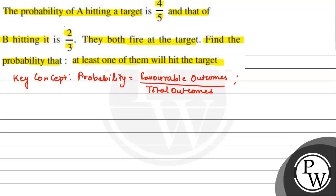If the probability of an event happening is given, then the probability of the event not happening is 1 minus P of A. We will use this concept to solve this question.